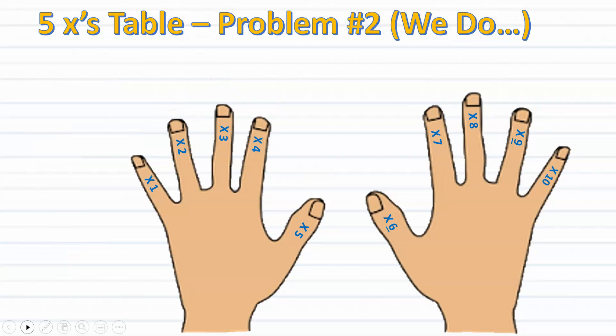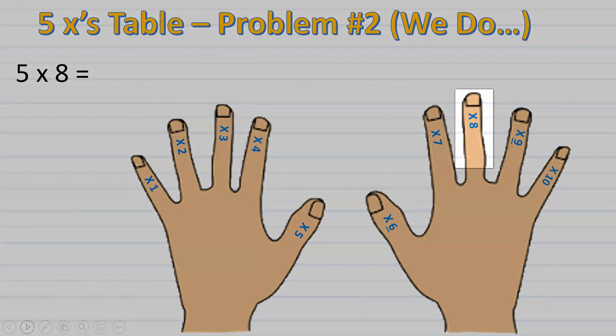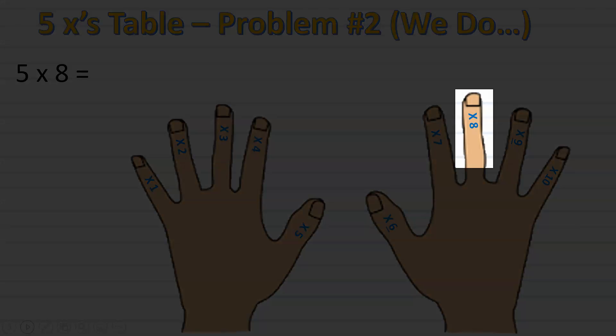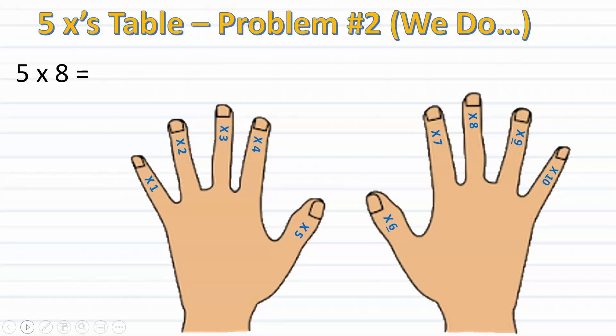Okay, now this time sing along with me as we try to solve for 5 times 8. And make sure that as you sing to count off each finger as you say each number. And it's also important to remember that since we're skip counting by fives, we're going to stop at our eighth finger since we're multiplying 5 times 8.